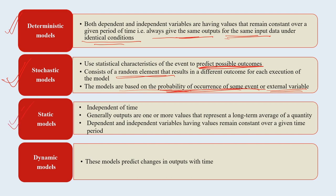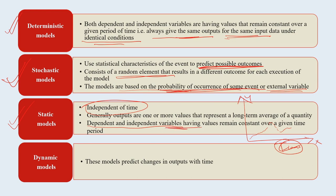Static models are independent of time - they will not change along the time axis. Time is essentially a meaningless variable in static models. Outputs are one or more values representing a long-term average of a quantity. Dependent and independent variables have values that are constant over a given time period. When you want to analyze or simulate any event against time, static models are not the right ones to use.